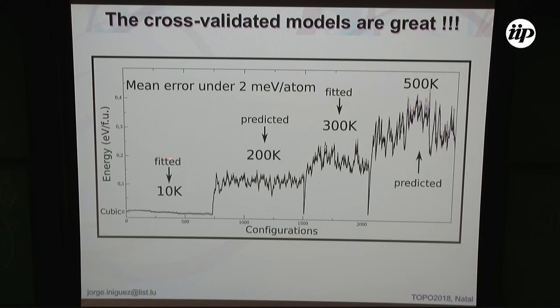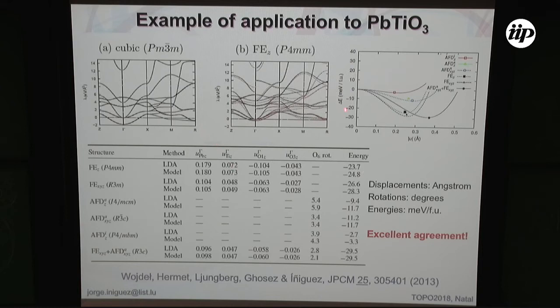Here is an example of how we handle overfitting, though I'll skip the details. Things work very well. For example, fitting a model to DFT molecular dynamics at 10 kelvin and 300 kelvin, the model reproduces the ab initio data quite well. Predicted information — not used in fitting — is also well reproduced, in particular the energy differences between typical configurations at 10 kelvin versus 200 kelvin. This is very important if we want to later predict properties as a function of temperature.